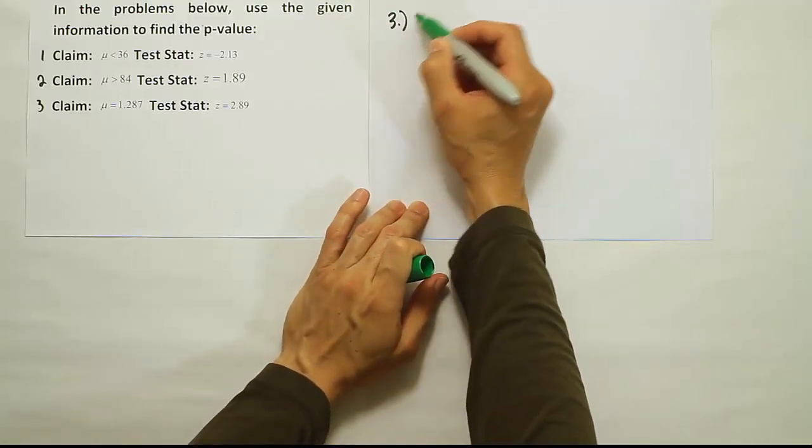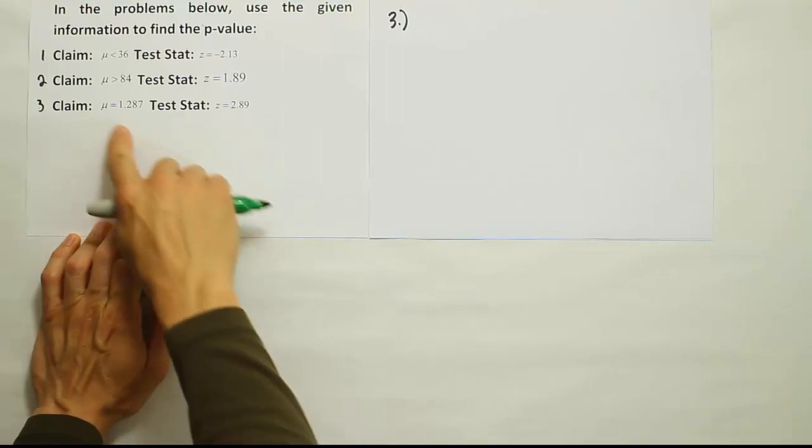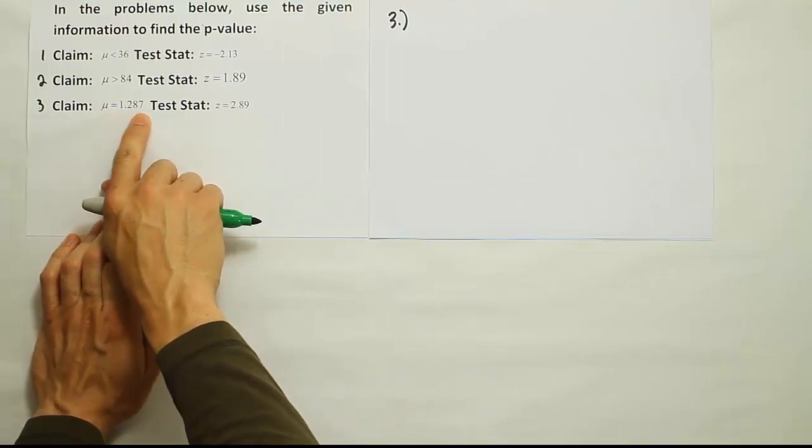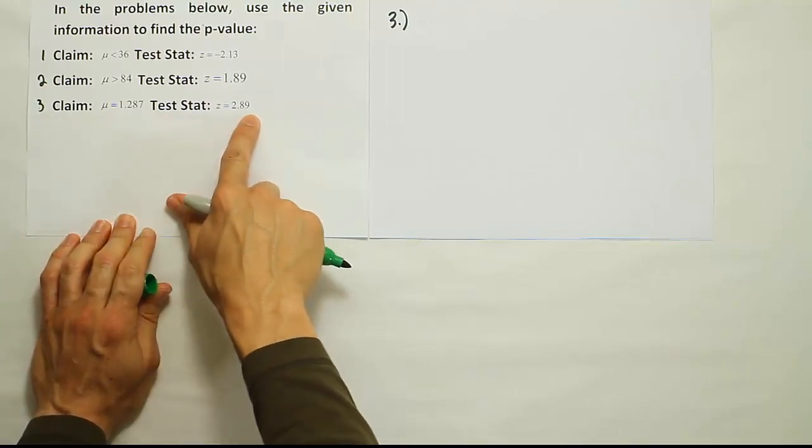Okay, so the third problem from this set gives us that the claim is that the mean is equal to 1.287 and the test stat is 2.89.